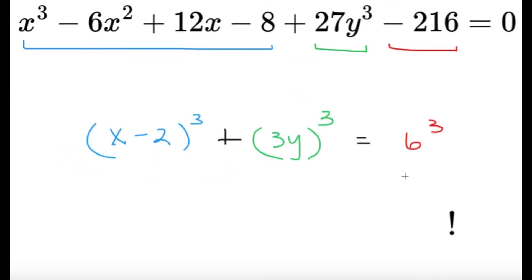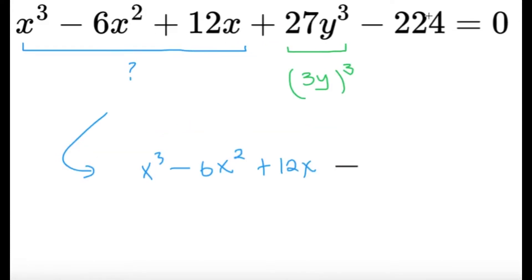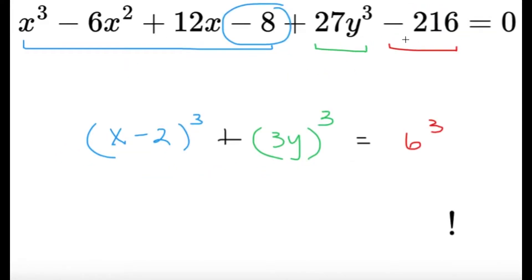Now that we observe that it is kind of related, let's try to complete the cube here: x³ - 6x² + 12x - 8. I just extracted a -8 from this -224, leaving us with -216 here.